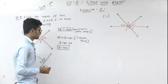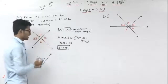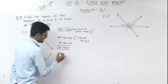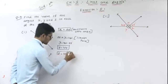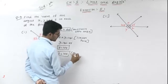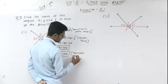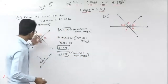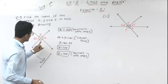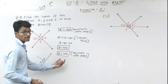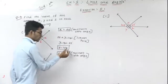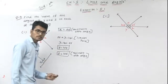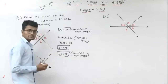X is equal to 55. Y is equal to 125. And Z is equal to 125 as well, because Z and Y are vertically opposite angles, and vertically opposite angles are equal. So the final answers are: X = 55, Y = 125, and Z = 125. Now you know how to solve these types of questions.